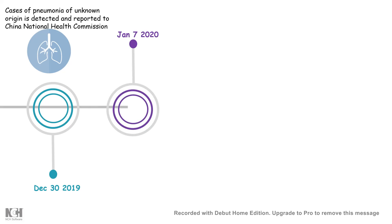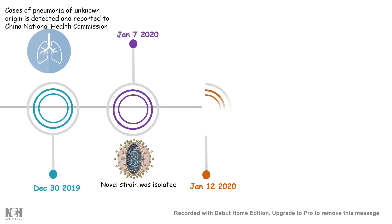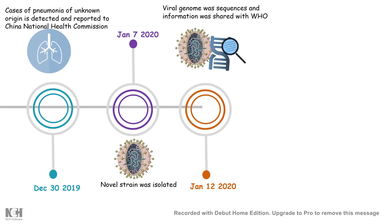Around January 7, 2020, the novel strain causing this pneumonia was isolated and found to be a coronavirus strain. This coronavirus strain was then sequenced in several labs in China and the sequence information was shared with the World Health Organization.